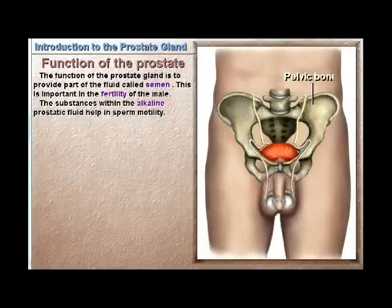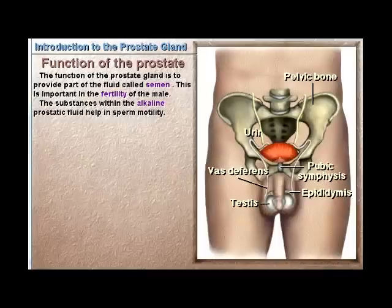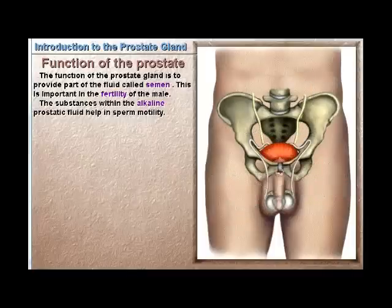The function of the prostate gland is to provide part of the fluid called semen. This is important in the fertility of the male. The substances within the alkaline prostatic fluid help with sperm motility.